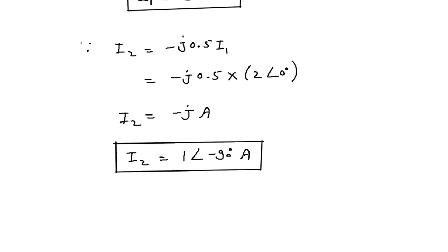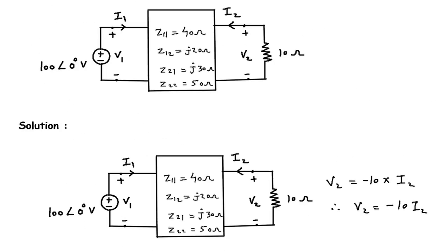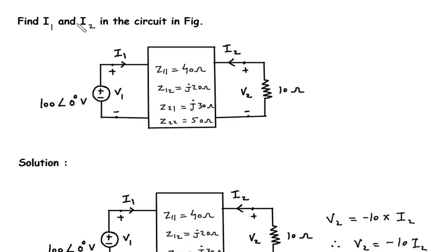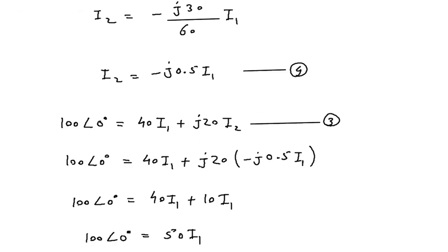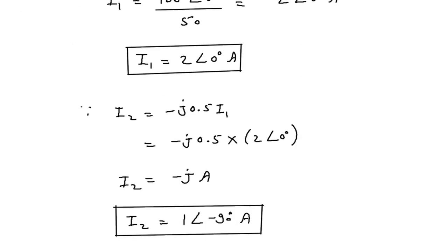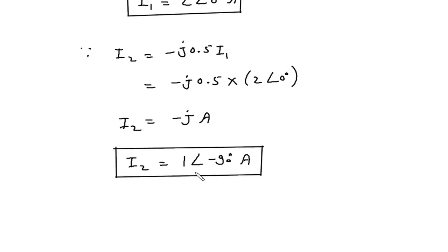We had to find I1 and I2 in the circuit. The final answer is: I1 = 2∠0° amperes and I2 = 1∠-90° amperes.